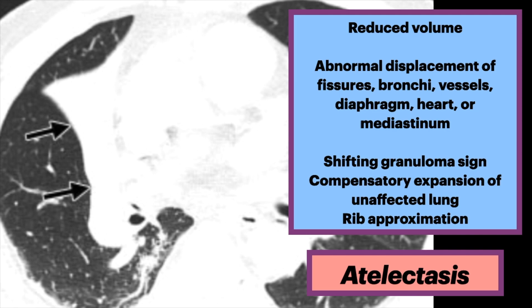Atelectasis is often associated with abnormal displacement of fissures, bronchi, vessels, diaphragm, heart, or mediastinum. Other signs include the shifting granuloma sign, compensatory expansion of the unaffected lung, and rib approximation.